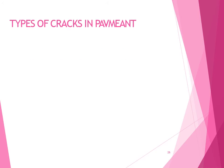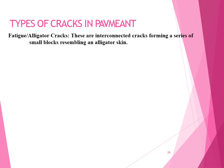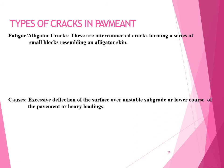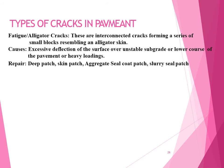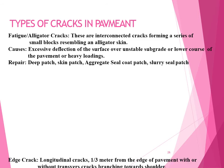Types of cracks in pavement — fatigue or alligator cracks: these are interconnected cracks forming a series of small blocks resembling alligator skin. Causes include excessive deflection of the surface over an unstable subgrade or lower course of the pavement, or heavy loading. Repairs include deep patch, skin patch, aggregate seal coat patch, and slurry seal patch.